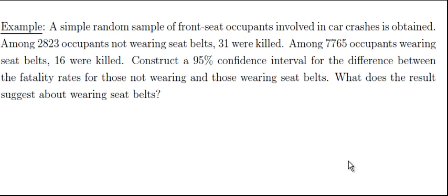Okay, so the first thing when I do these types of problems is I write down all the information. So here's a simple random sample of front seat occupants involved in car crashes. And so we have two groups. We have a group that was wearing a seatbelt and a group that wasn't. So this is the group that was not. So 31 out of the 2,823 were killed for the group that was not. And then the group that was wearing a seatbelt, we have 16 that were killed. We want to construct a 95% confidence interval for the difference between the fatality rates.